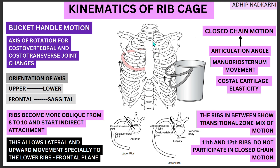When I say closed chain, what do I mean? The sternum is attached to your rib, the rib is attached to the vertebra, vertebra to the other rib and then it comes back and forms a closed chain. So the motion seen here will also be a closed chain motion. This motion is determined by three major factors: the articulation angle that happens at each level, the manubrious sternum movement, and also the costal cartilages. The elasticity of the costal cartilages will also determine the movement at the ribcage.